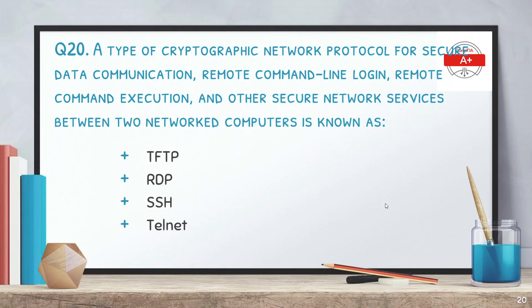Question 20: a type of cryptographic network protocol for secure data communication, remote command-line login, remote command execution, and other secure network services between two networked computers is known as — options are TFTP, RDP, SSH, and Telnet. The answer is SSH. SSH performs all the functions of Telnet, but its advantage is security: data transmitted between the switch and the client is encrypted, so even if intercepted, it cannot be read.